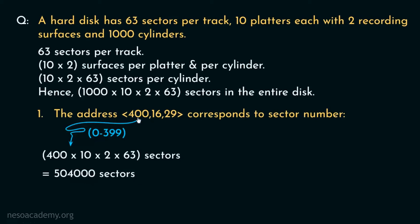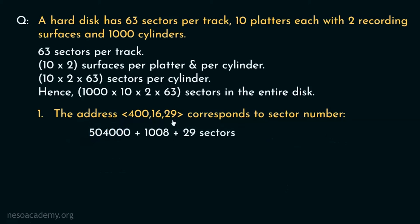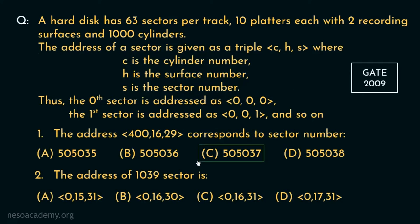After reaching cylinder number 400, we go to surface number 16. To get to surface 16, we cross surfaces 0 through 15 — that is 16 surfaces — each with 63 sectors, amounting to 1,008 sectors. Then, to reach sector number 29 within surface 16, we cross sectors 0 through 28, that is 29 sectors. In total: 504,000 plus 1,008 plus 29 equals sector number 505,037. So the address 400,16,29 corresponds to sector number 505,037, and option C is the correct choice.